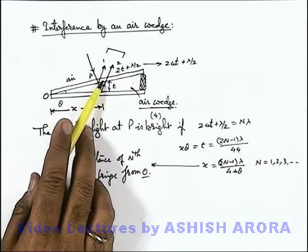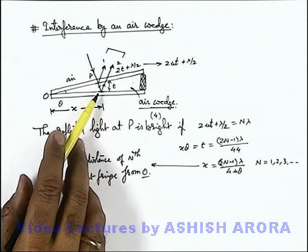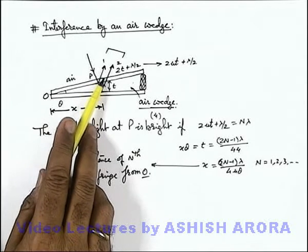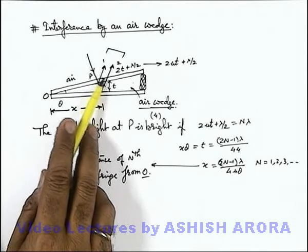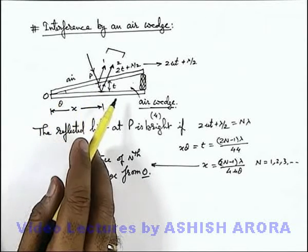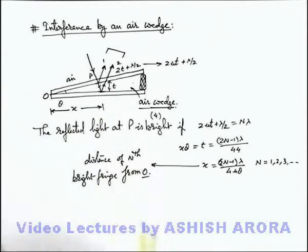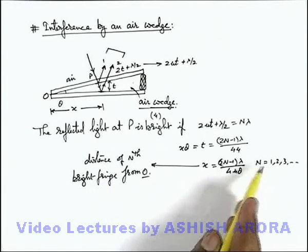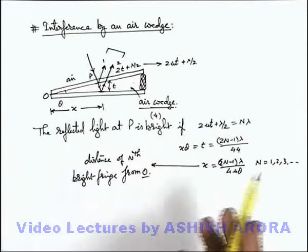But here, due to these glass plates, you can see in this situation the reflected light will be in opposite phase when t is negligible. So here, we can take n as 1, because at n equal to zero there is no bright fringe obtained here.